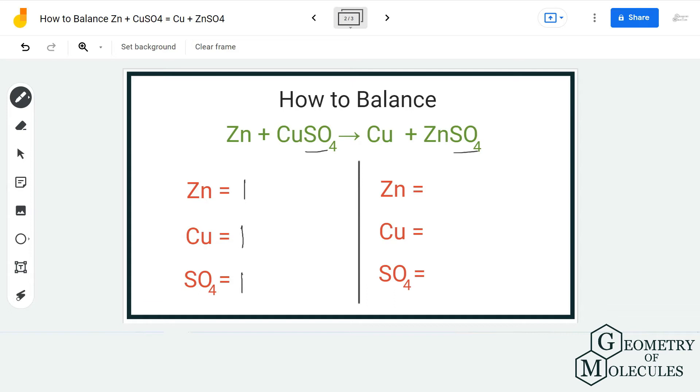When we move forward and count the number of atoms on the product side, we have one zinc atom, one SO4 group, and one copper atom. So this equation is already balanced and you do not need to add any coefficients because it is balanced as it is.